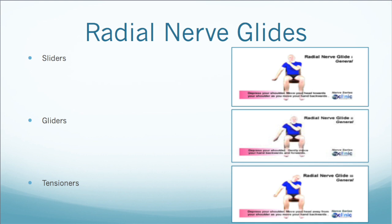Depending on the patient's stage of symptoms, the clinician can use neural glides to lengthen the radial nerve over time, starting with sliders when the patient is most sensitive and progressing to tensioners, where the nerve is put on tension both proximally and distally at the same time.